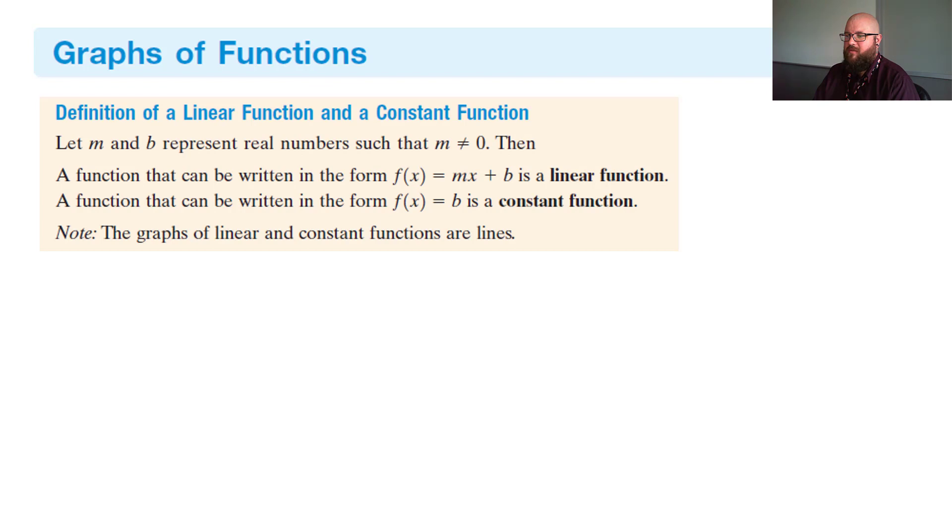A function that can be written in the form f(x) = b is a constant function. In other words, that's going to be a straight line. So the graphs of linear and constant functions are lines.